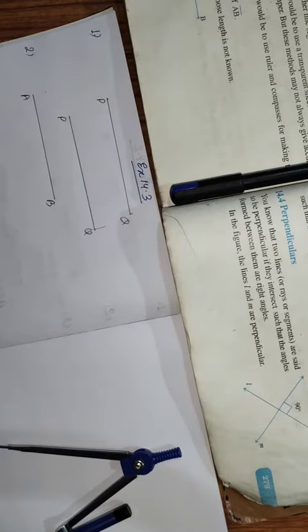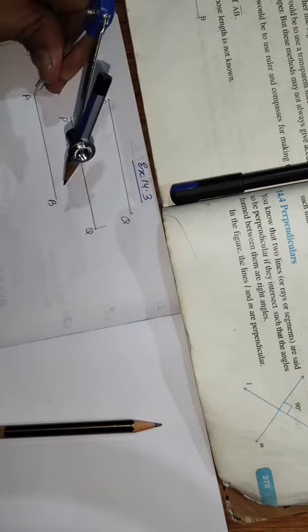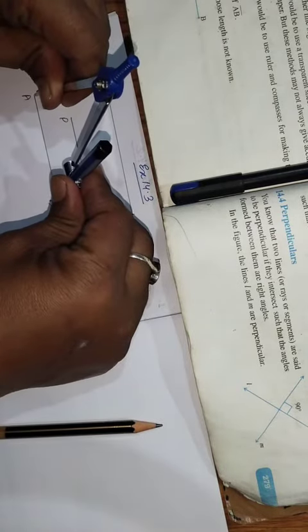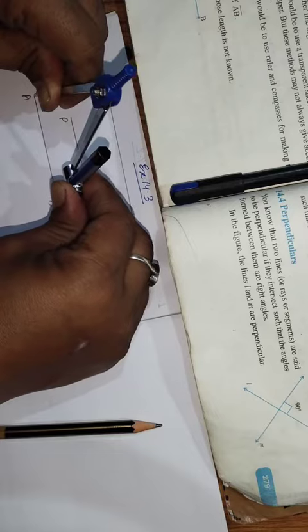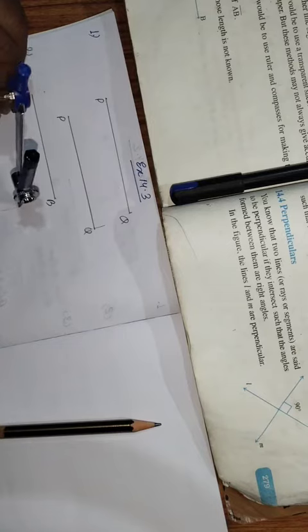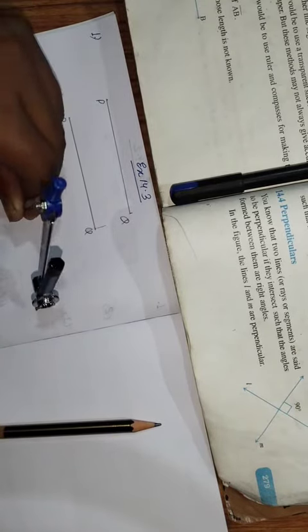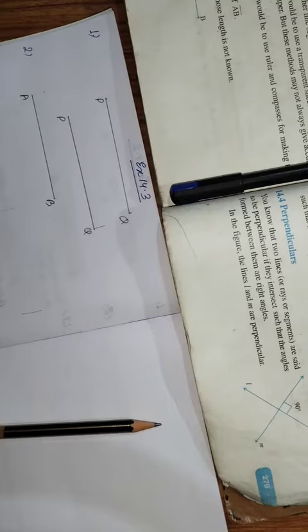Whose length you do not know, construct PQ such that PQ is twice the length of that of AB. So first what you do, take the length on the compass like this. For taking two times, what you will do? Take AB one times. Again you put this compass here on this mark. And this is two times.